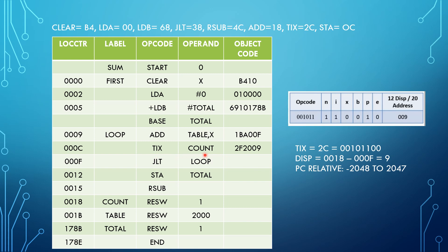Next we have TIX count. It is a Type 3 instruction format. The TIX mnemonic value is used for the opcode. It is not immediate or indirect addressing mode, so N and I are set to 1. There is no comma, so X is 0. The value of COUNT in the table is 0018 and the program counter is 000F, giving displacement 9. Since 9 lies between -2048 and 2047, the program counter bit P is set to 1. E is 0 for Type 3. The object code is 2F2009.